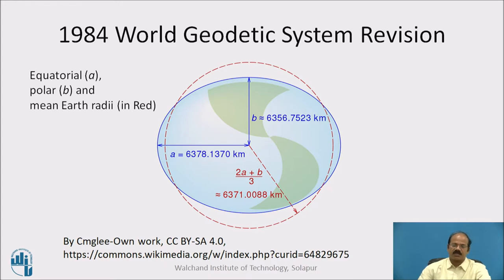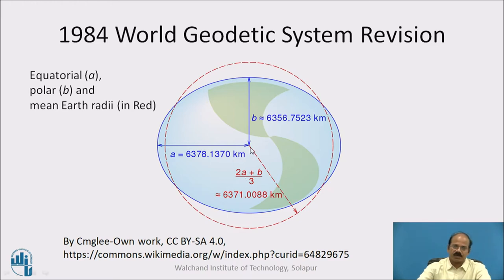This is another classical way of showing the world geodetic system. The earth is not a perfect sphere — it is an ellipsoid having variation in radius almost everywhere. Along the equatorial plane, the radius is largest at 6378.137 km, while along the polar axis it is smallest at 6356.7523 km. The mean radius of the earth, if assumed as a sphere, comes out to be 6371.0088 km. So A is the equatorial measurement, B is the polar measurement, and the mean earth radius is shown in red.